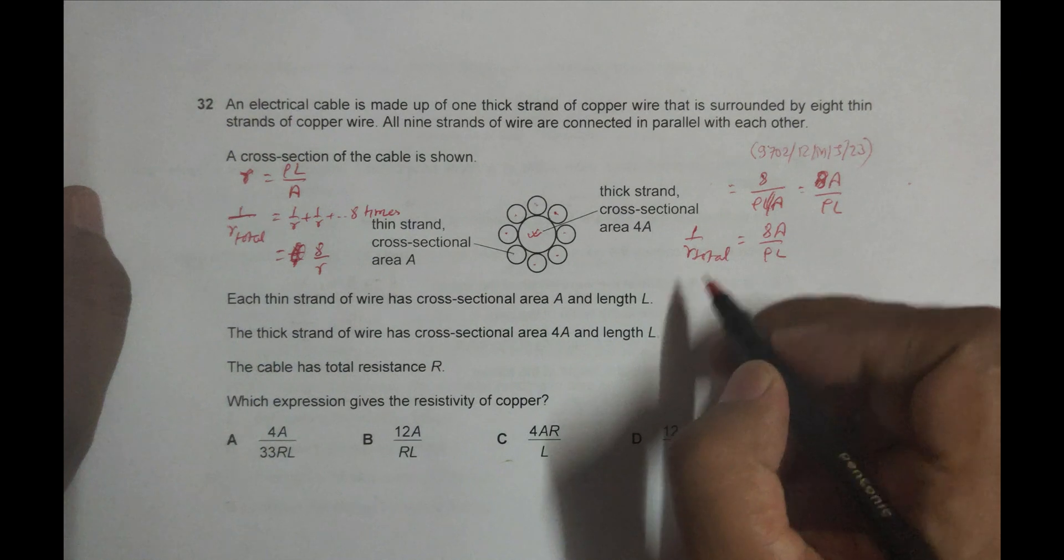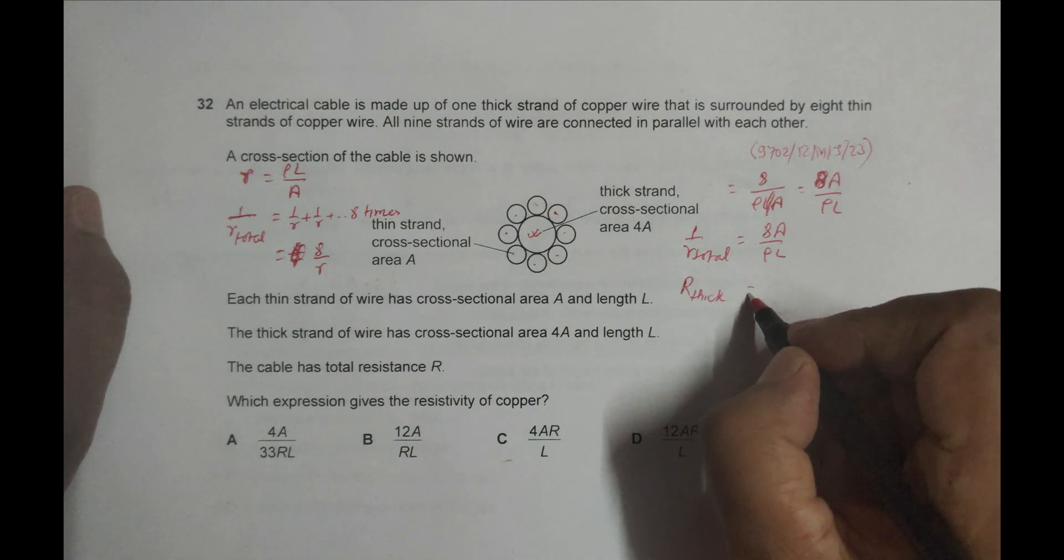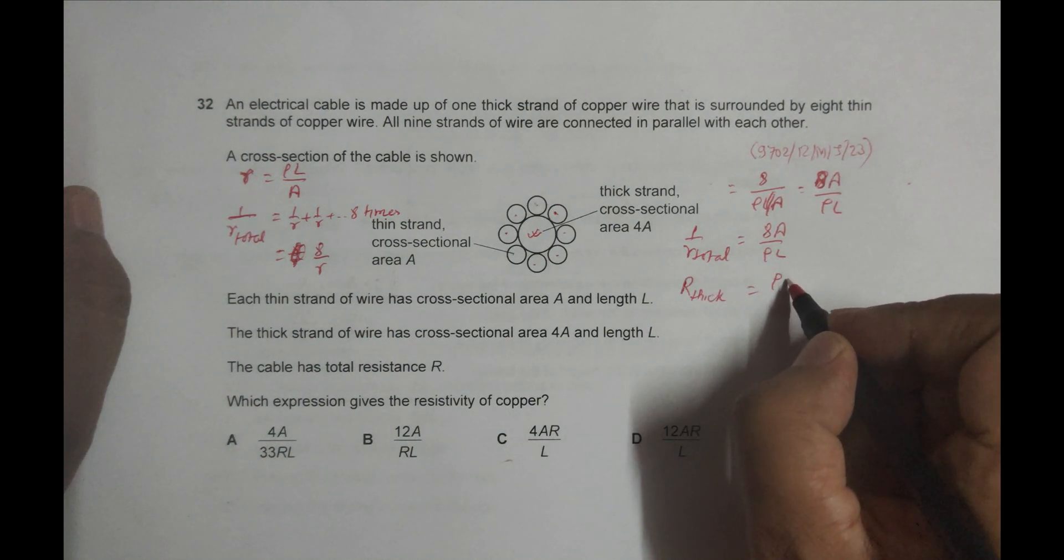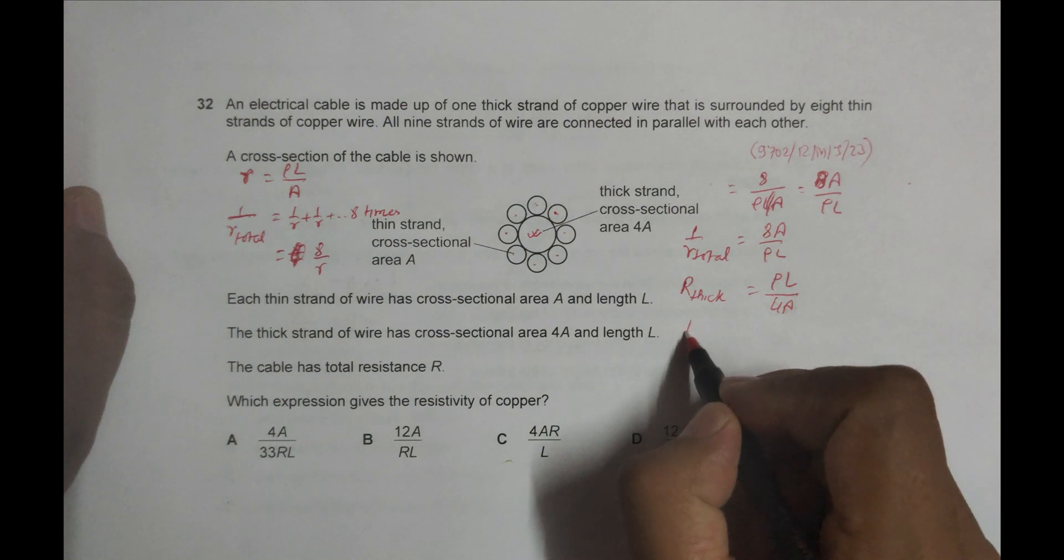Now we have one thicker strand. Its resistance is R_thick equals ρL/(4A), so it is 4A. Therefore, 1/R_thick equals 4A/(ρL).